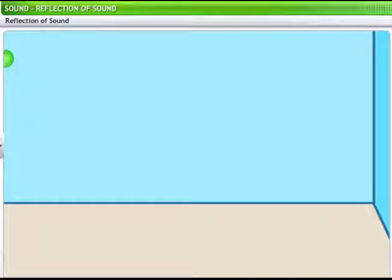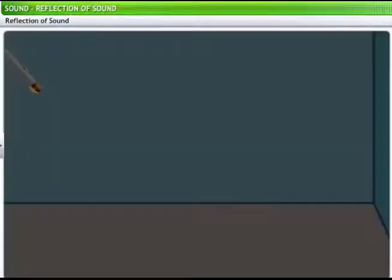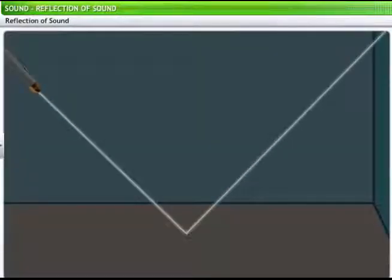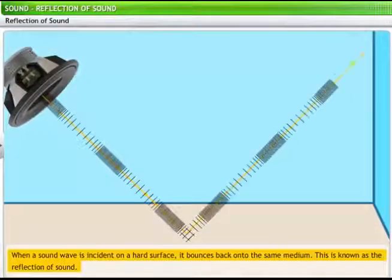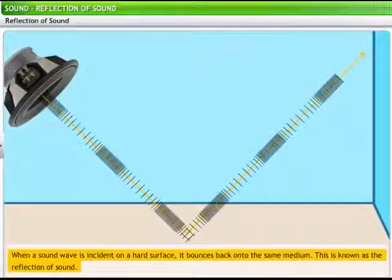Look at this ball. When it is thrown on a hard surface, it bounces back. Light as well as sound waves behave in a similar manner. When light rays are incident on a reflecting surface, they bounce back. Similarly, a sound wave incident on a hard surface bounces back into the same medium. This is known as the reflection of sound.